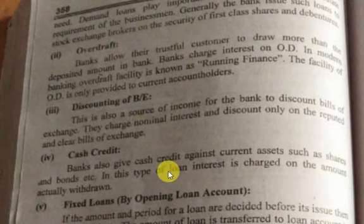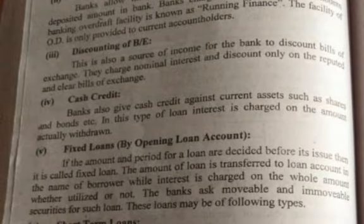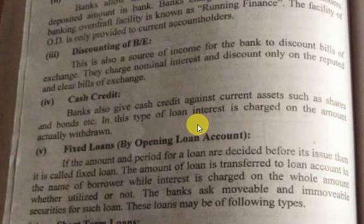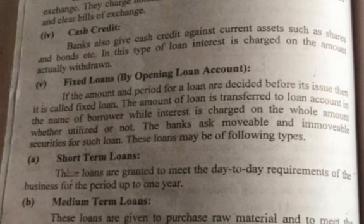Fourth one is cash credit. Yeh aisa loan hai jo hamare current assets ke against diya jaata hai — jaise current assets mein shares hote hain, bonds hote hain, aur is tarah ki doosri cheezein. Aise loans jo current assets ke against diye jaate hain, unhe cash credits kaha jaata hai. Bank cash credit ke liye bhi apne funds utilize karta hai.